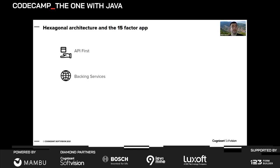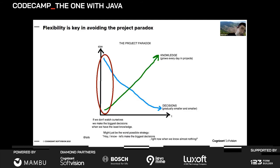Hexagonal takes this even further — you don't even care what type of database it is, or whether it's a database at all. You can change things easily. Netflix used this approach when switching from relational to non-relational databases — there's a link in the resources. Hexagonal architecture equals flexibility, and flexibility is key in avoiding the project paradox: we make big decisions at the start when we know the least. Hexagonal lets you defer those decisions until you have more information.